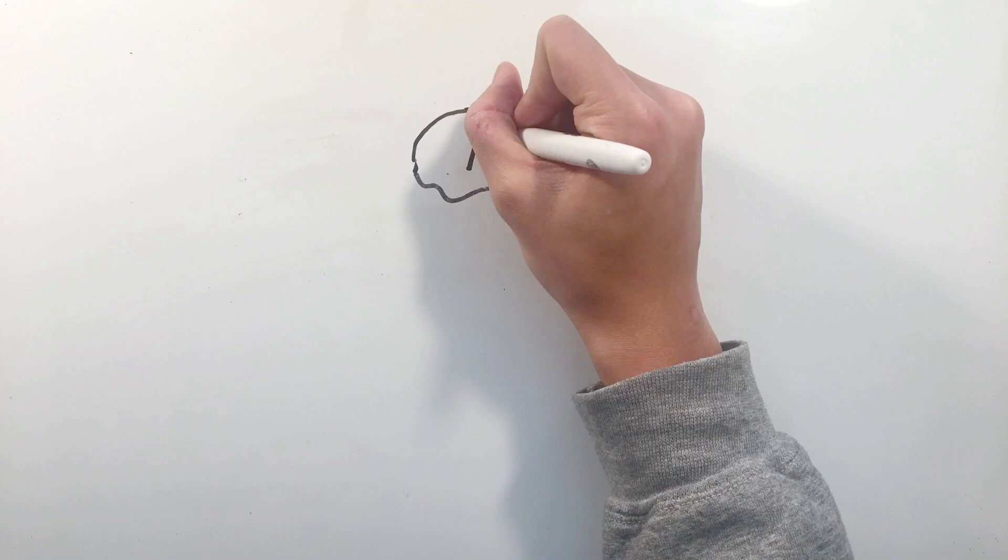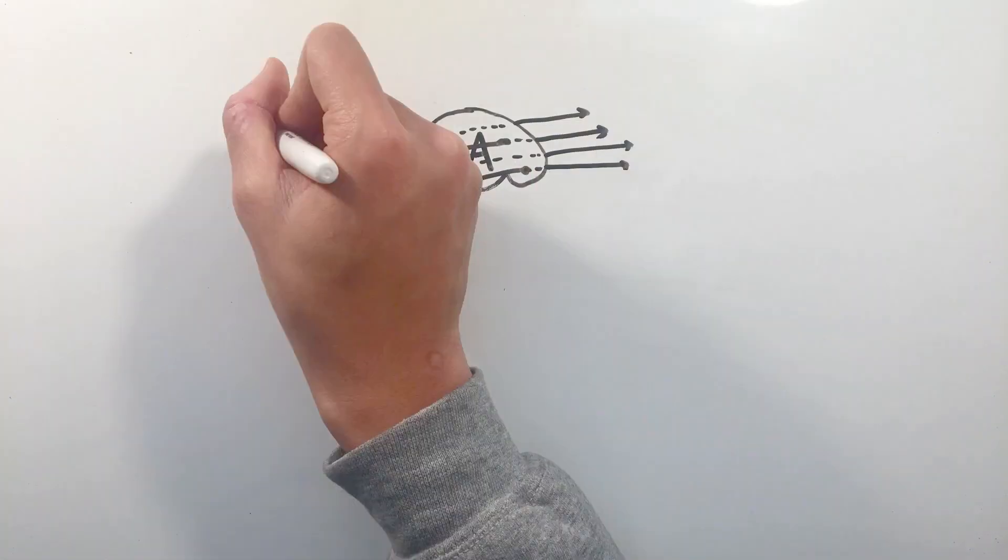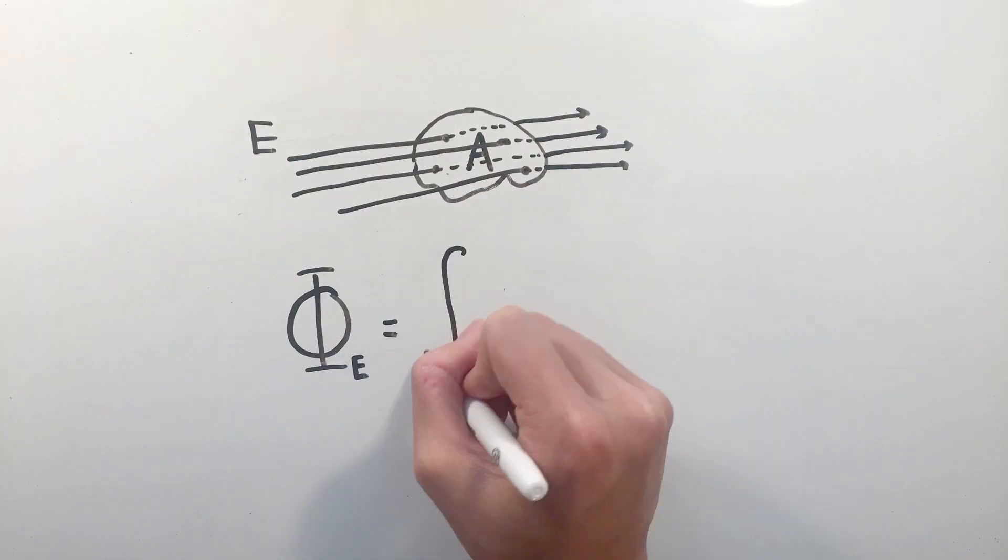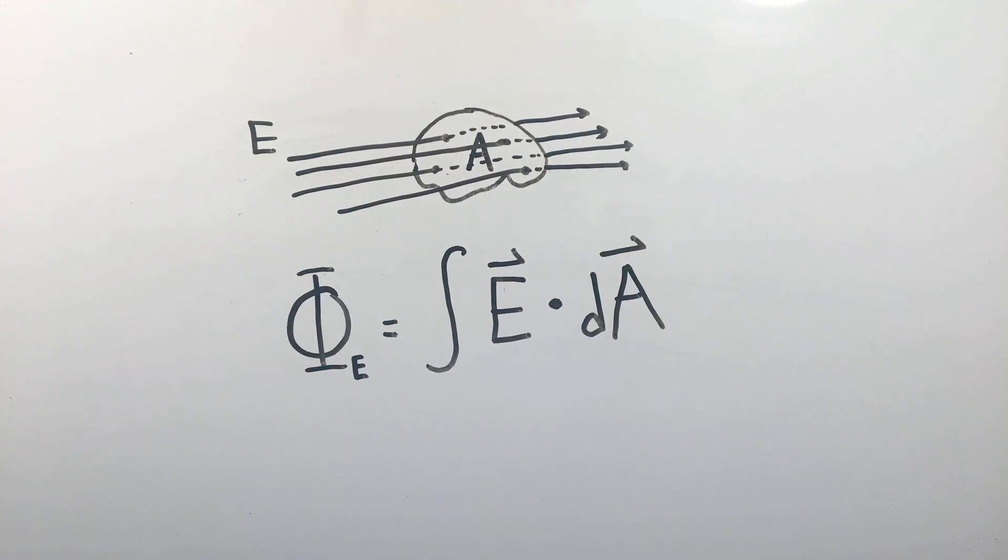we need to take a look at a concept known as electric flux, which is the surface integral of the dot product between the electric field and surface area. Essentially, electric flux measures the strength of an electric field penetrating through a surface.